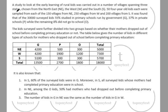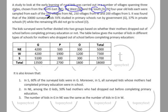The question says: a study to look at early learning of rural kids was carried out in a number of villages spanning three states — Northeast, West, and South, abbreviated as N, E, W, S. 50 four-year-old kids were sampled from 150 villages in Northeast, 250 villages in West, and 200 villages in South. Total villages sampled: 150 + 250 + 200 = 600 villages, each with 50 students.